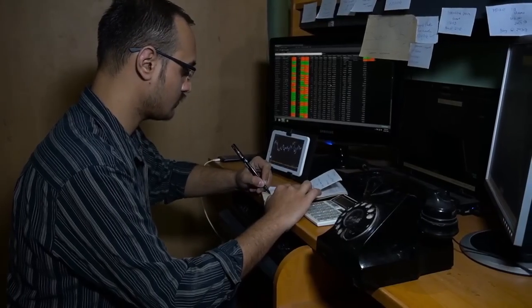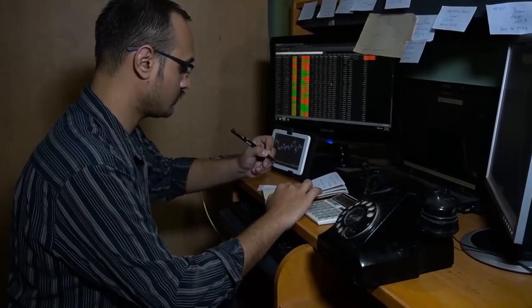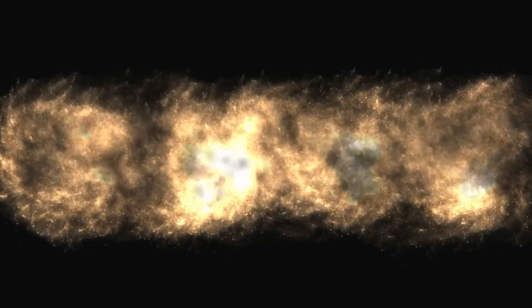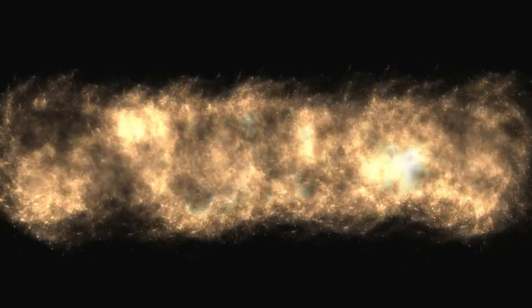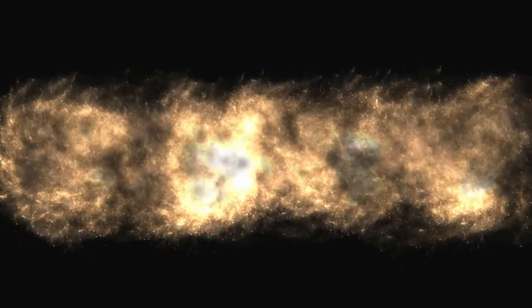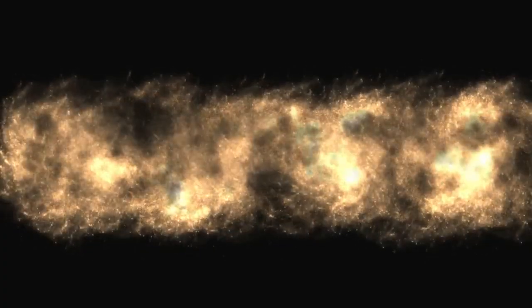3I Atlas is moving faster than anything humanity has ever tracked inbound from interstellar space, nearly 87 kilometers per second relative to the Sun as of this week. In practical terms, it's covering the distance between Earth and the Moon in less than 80 minutes. Every hour it travels, gravitational tugs from the Sun, Jupiter, and Mars adjust its path by micrometers per second, tiny changes that become enormous across tens of millions of kilometers.